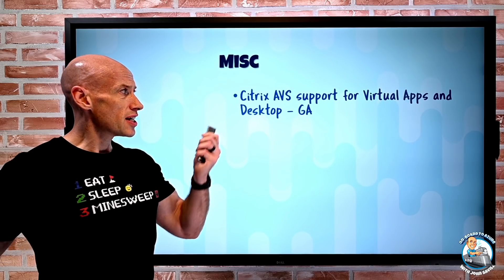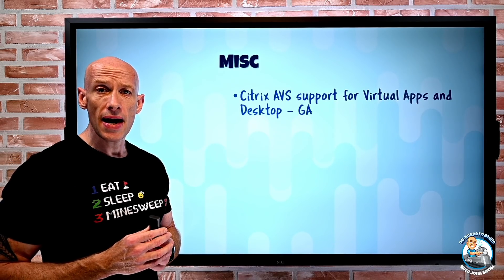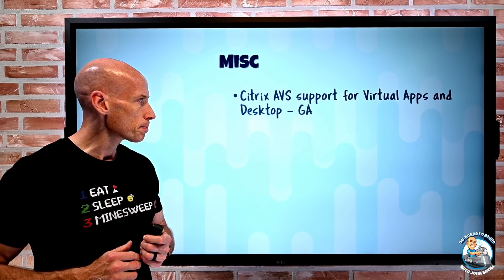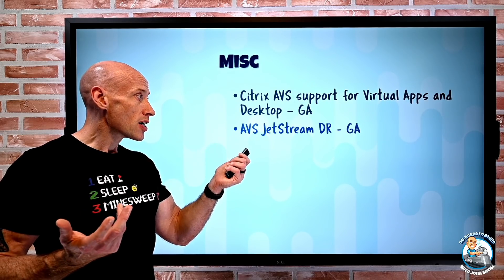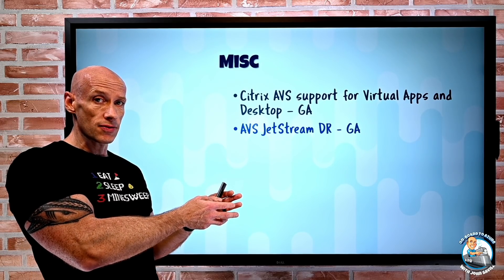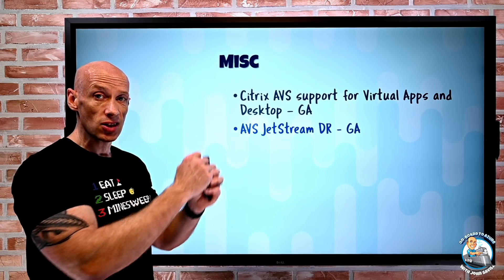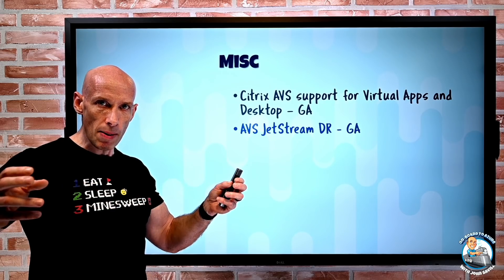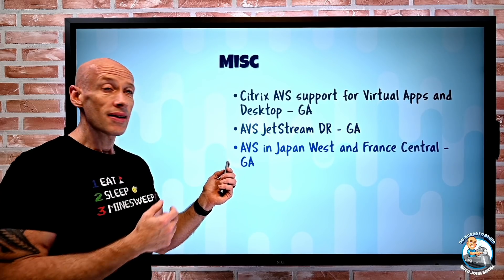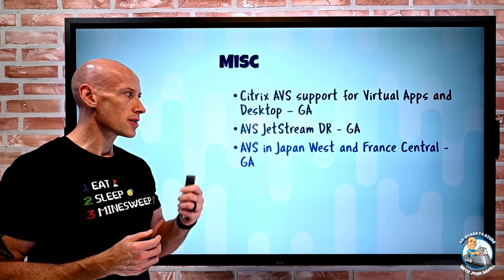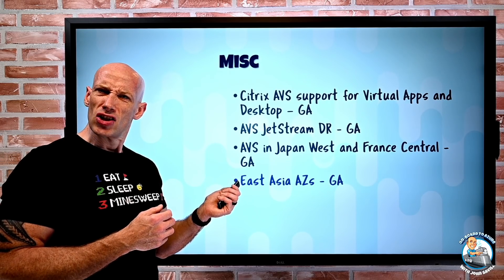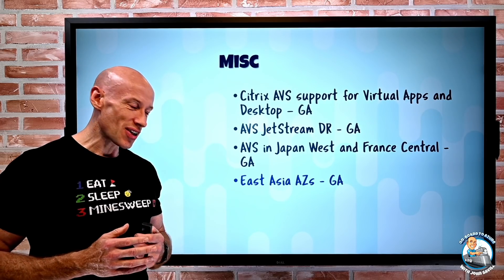In miscellaneous updates: Citrix now has Azure VMware Solution support for its virtual apps and desktop solutions, that's GA. The Azure VMware Solution Jetstream DR solution is also now GA — covering on-premises vSphere private clouds to AVS, or AVS to another AVS for replication and failover. AVS is also now available in Japan West and France Central. East Asia now has availability zones, generally available. There's a new Sweden Central region that includes availability zone support.